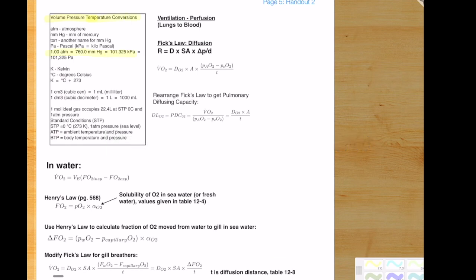Please use your handy dandy handout. It's got lots of super useful info, such as unit conversions, and here's the in-water version of what we were just modeling. VO2 equals VE times the gradient of FO2 inspired minus FO2 expired. Obtain FO2 in water from Henry's law, and you can look up values for alpha, the oxygen solubility coefficient, in the book.